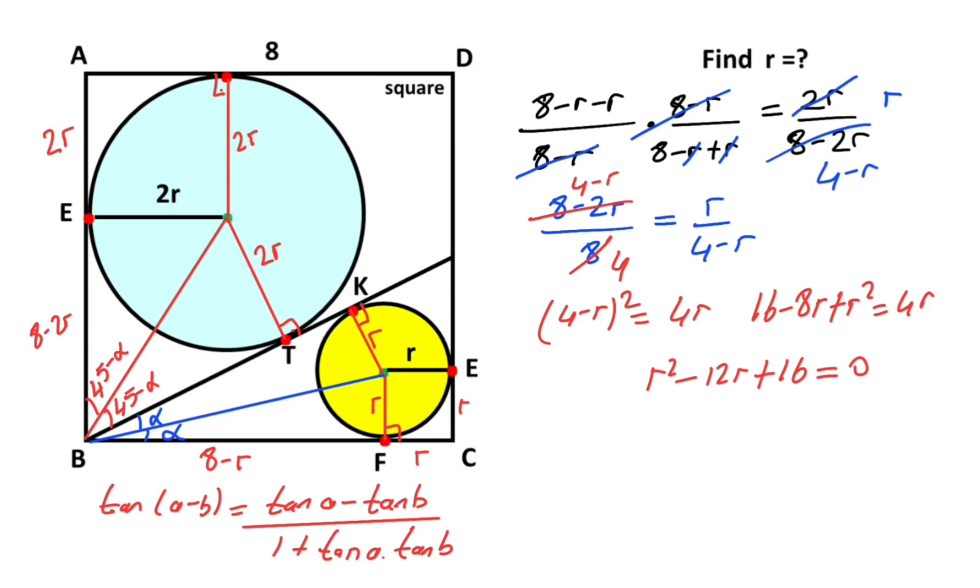To find the roots you can use delta, but I want to convert this expression to a perfect square. It doesn't matter. Therefore, r minus 6 whole squared minus 36 plus 16 equals zero. So r minus 6 whole squared equals 20, right? Let's clear in here.